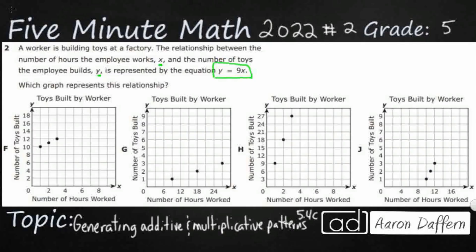Let's make sure they each have number of hours worked for x, which is good. They each have number of toys built for y, which is good. Sometimes problems like this will switch the labels and the axis to try to mess you up.